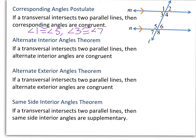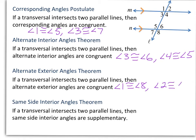The Alternate Interior Angles Theorem says if a transversal intersects two parallel lines, then alternate interior angles are congruent. The Alternate Exterior Angles Theorem gives us angle 1 congruent to angle 8 and angle 2 congruent to angle 7. Finally, the Same Side Interior Angles Theorem says if a transversal intersects two parallel lines, then same side interior angles are supplementary — so angle 3 plus angle 5 equals 180, and angle 4 plus angle 6 equals 180.